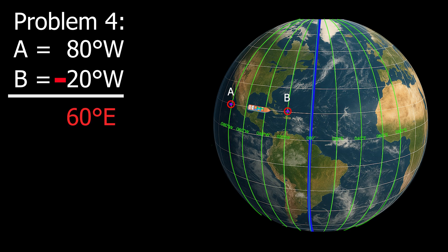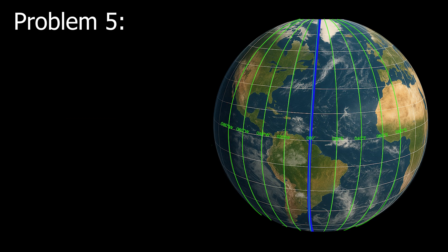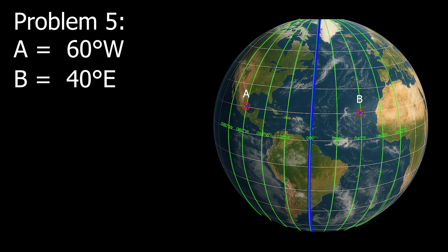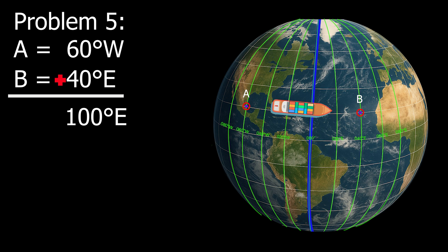Example number five: Point A, 60 degrees west. Point B, 40 degrees east. The points are in different hemispheres, so we add them: 60 plus 40 equals 100. The vessel is moving east. Therefore, the D-long is 100 degrees east.